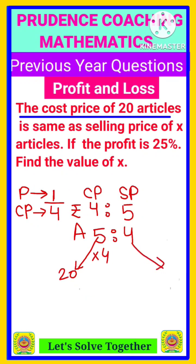So here also in SP you need to multiply by this 4. So multiply by 4, you are getting here 16 articles. That means cost price of 20 articles is same as the selling price of 16 articles.